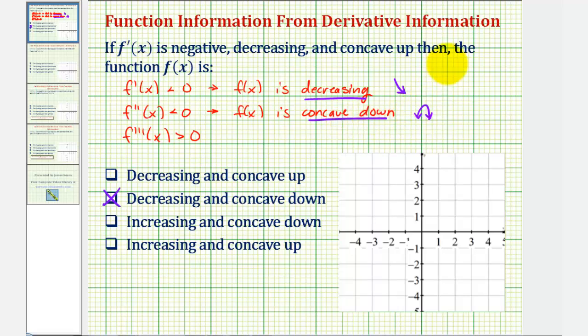And because f of x is always decreasing, it would have to resemble the right side of this piece that's concave down. So the graph might look something like this. Notice how it's decreasing and also concave down.